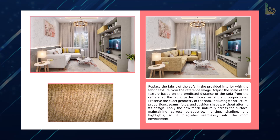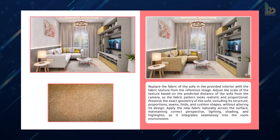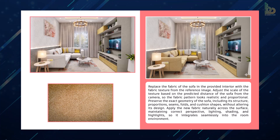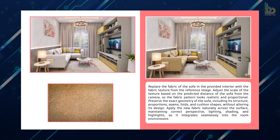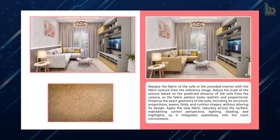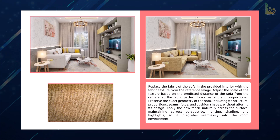With Nano Banana, you can easily change fabrics by using any material from your preferred brand and applying it directly onto sofas, armchairs, and other furniture — all in just one prompt with complete accuracy. Notice how the shadows, textures, and even the smallest details like the corners and cushions are perfectly preserved.